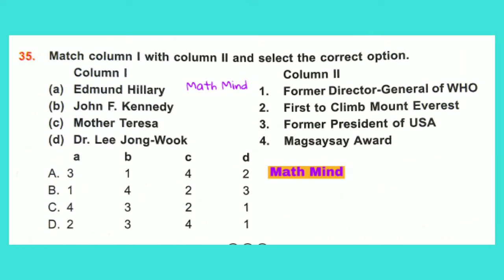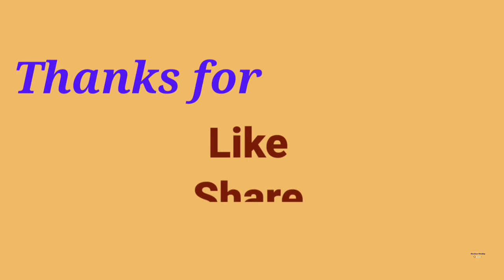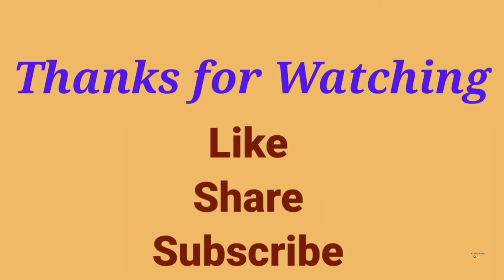Question No. 35: Match Column 1 with Column 2 and select the correct option. A. Edmund Hillary matches with 2 — first to climb Mount Everest. B. John F. Kennedy — former president of the USA. C. Mother Teresa — received the Marxist award. D. Dr. Lee Jong-wook — former Director General of WHO. So Option D is correct. Thanks for watching. Please like, share, and subscribe to the channel.